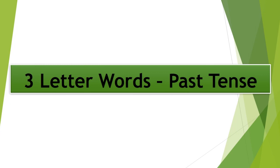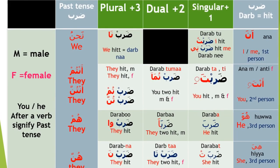For plural (three or more): نحن (We). We hit. For males: They hit. For females: Tharabtumna. Tharaboo — They hit. Tharabna — They hit. For dual (two): Tharabtumna — You two hit (male and female). Tharabaa — They two hit (male). Tharabata — They two hit (female).